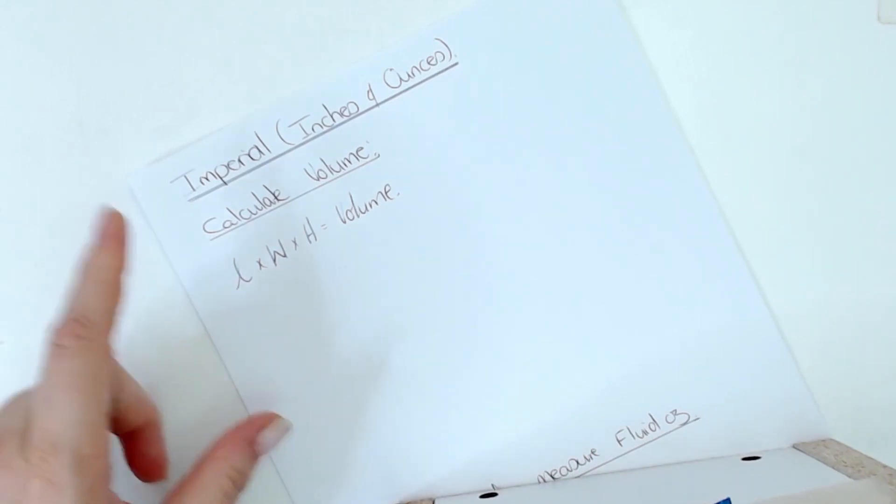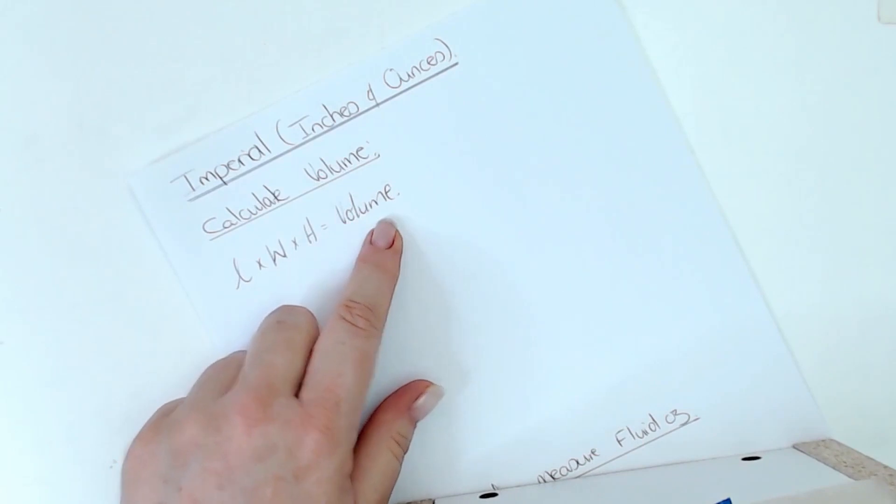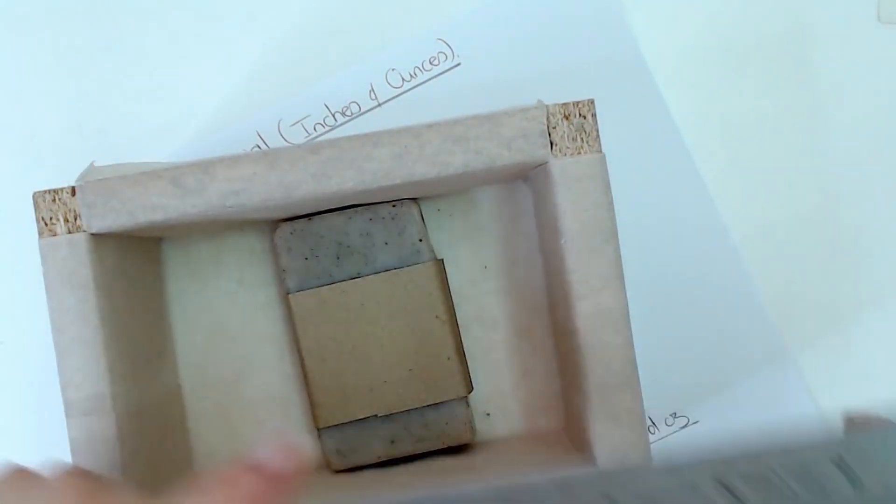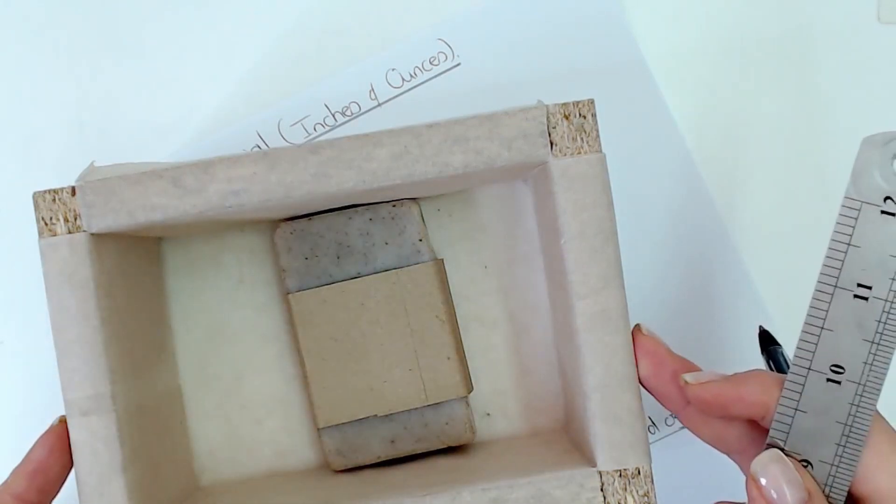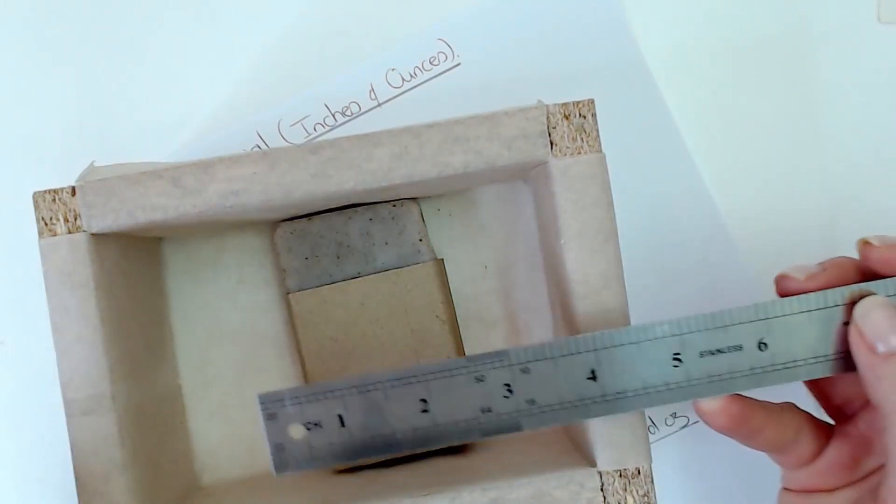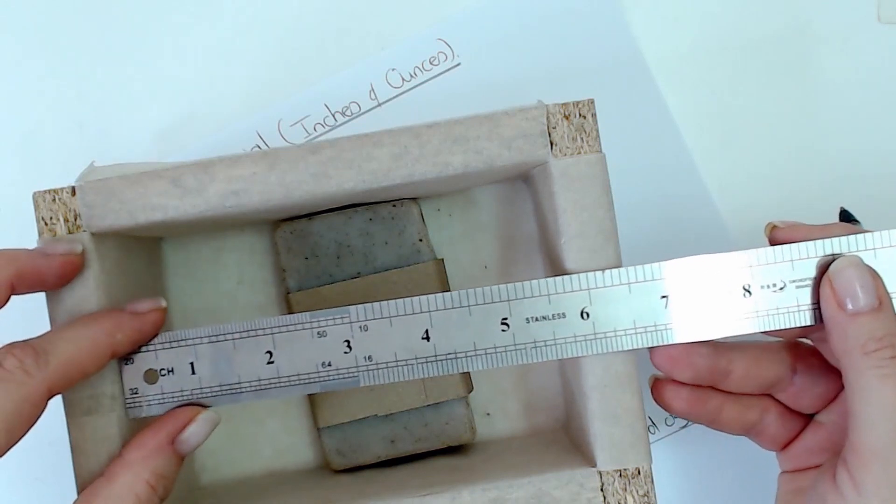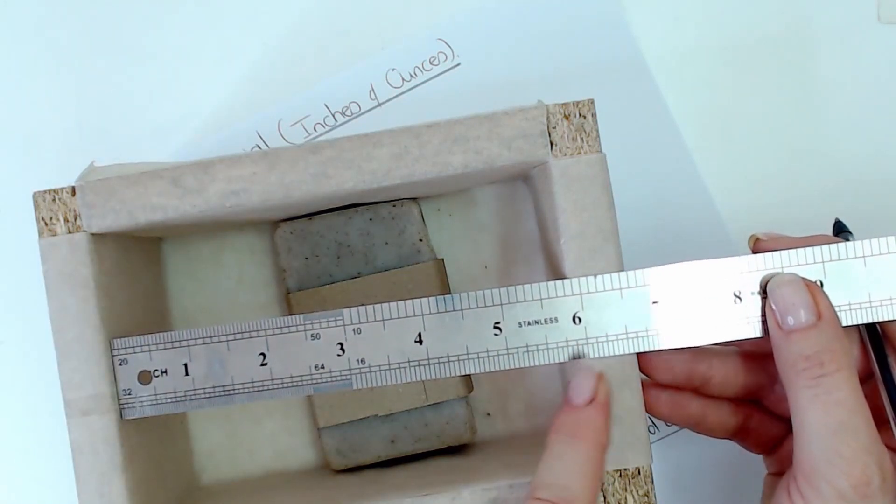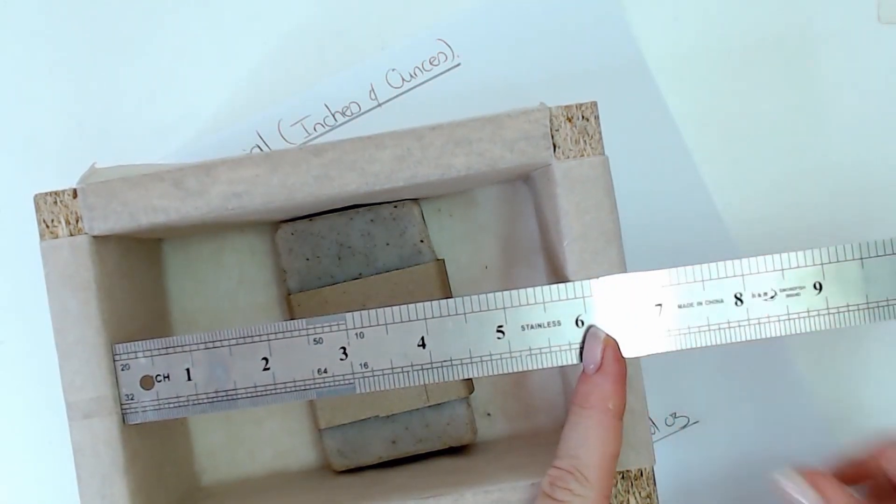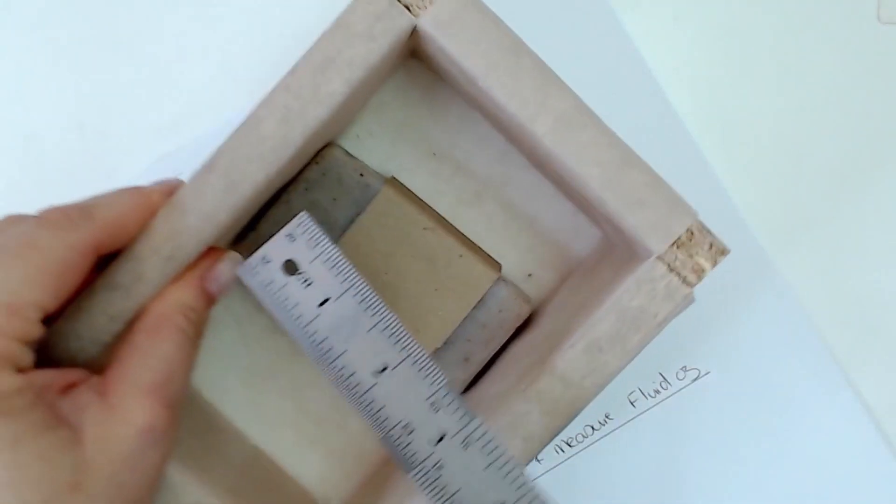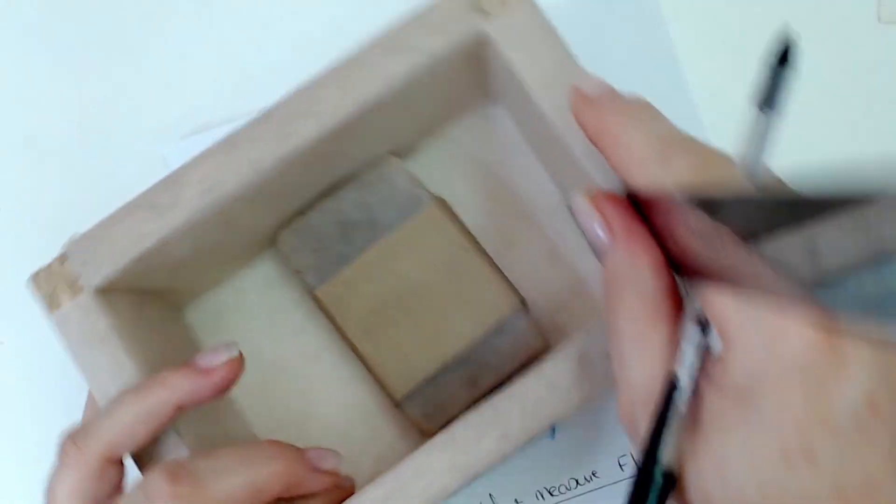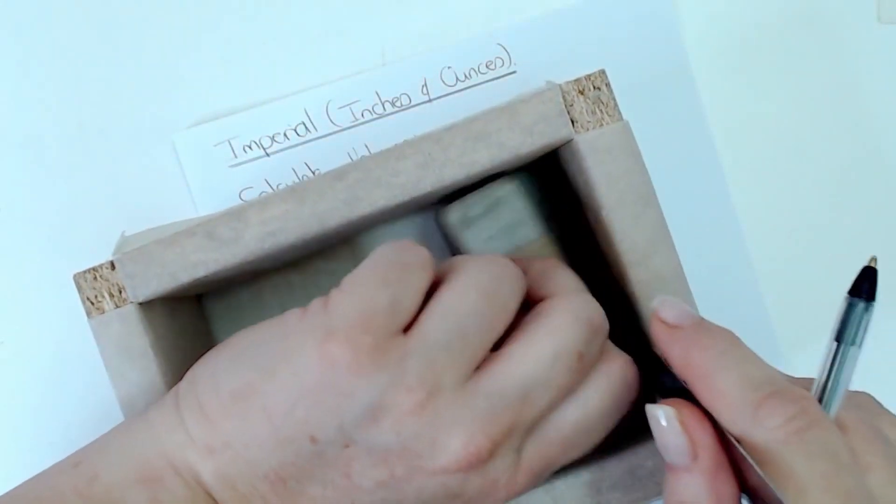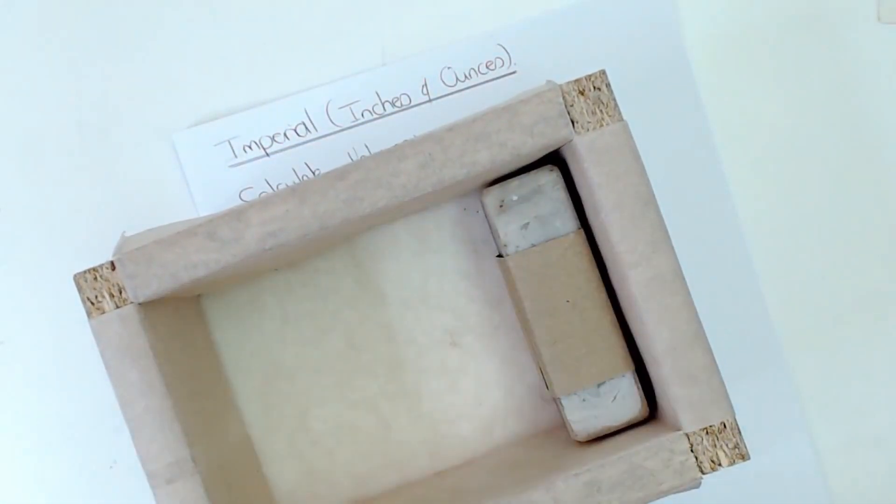What we're going to do is we're going to measure the length times the width times the height and we're going to get the volume then. So for this specific mold, remember we always measure the inside measurements, not the outside ones, because we need the volume inside here. So we're going to take our ruler and for this mold it's going to be six inches in length, the width is going to be four inches, and then the height that you want to fill your mold is going to depend on how full you want to make it.